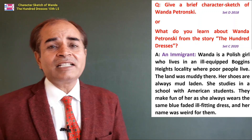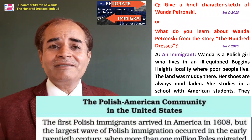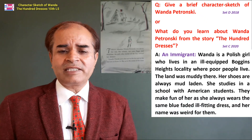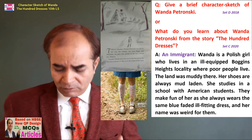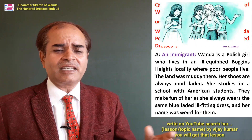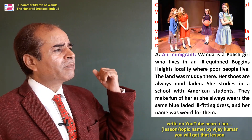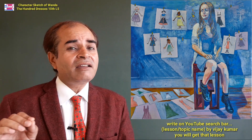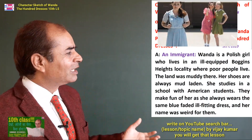From the summary, we observed qualities and virtues in Wanda. First of all, she is an immigrant — she is from Poland. Wanda is a Polish girl who lives in an ill-equipped Boggins Heights locality where poor people live. The land was muddy there, her shoes are always mud-laden. She studies in a school with American students who used to make fun of her. She always wears the same blue faded ill-fitting dress, and her name was weird to all of her classmates.